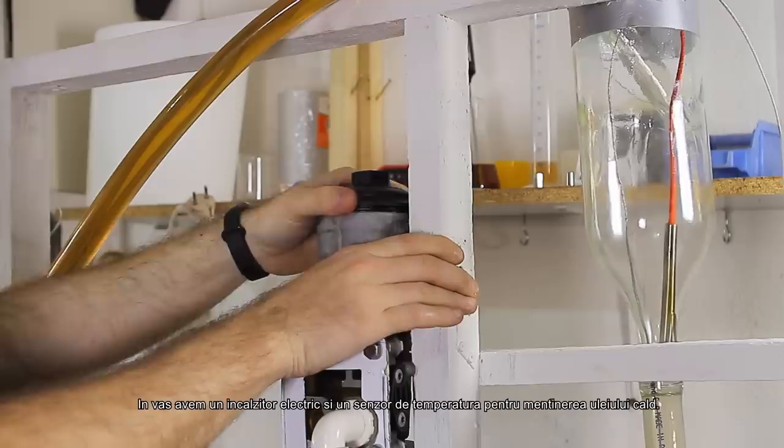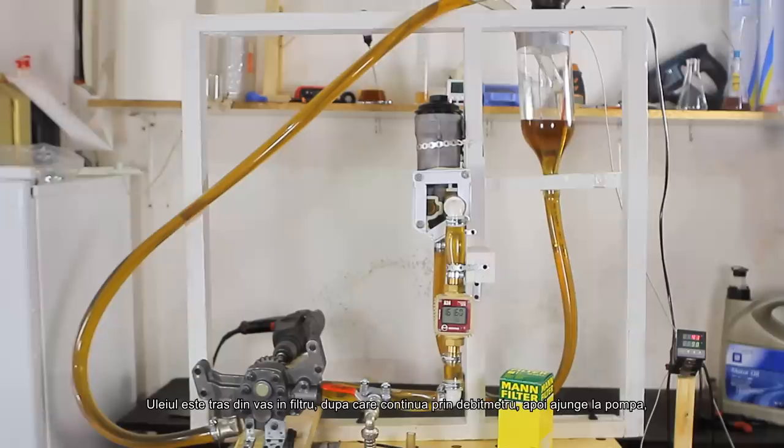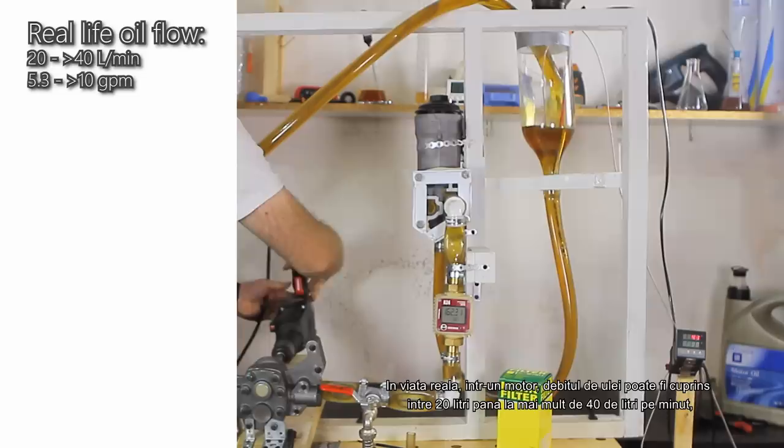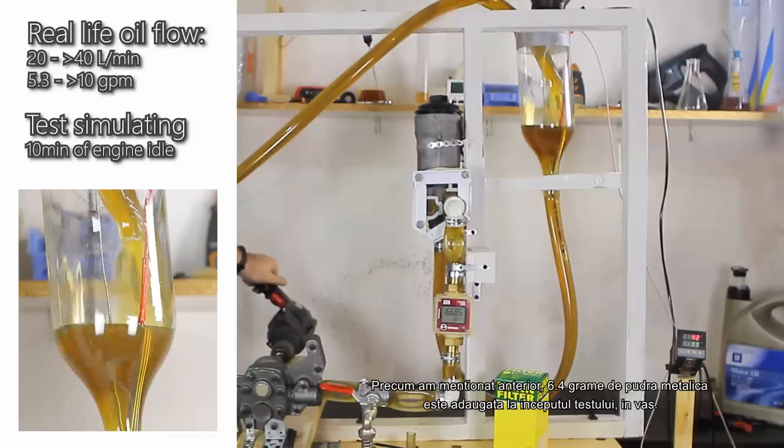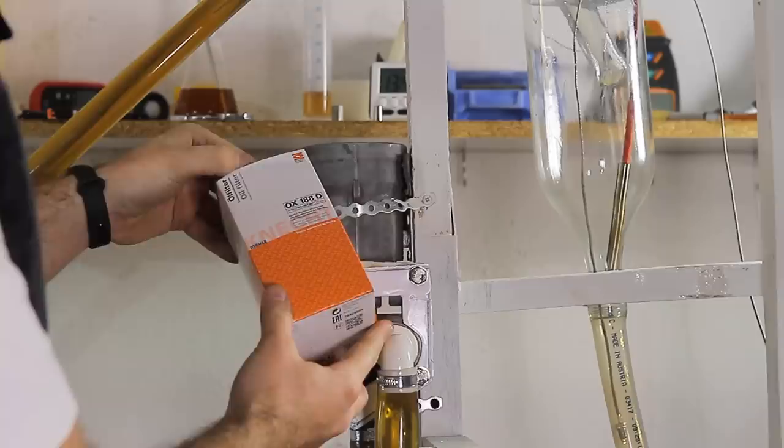The filter is placed inside the housing and the oil is poured in the tank which is just a glass bottle. Inside the tank we have an electric heater and a temperature sensor that keeps the oil warm. The oil is pulled into the filter after which it continues down through the flow meter and then it reaches the pump where it's pushed back into the tank and the cycle continues. In real life, the oil flow to an engine ranges from approximately 20 liters a minute to over 40 liters a minute. So our test would simulate 10 minutes of engine idle. In order to analyze the retention capacity of the filters, 6.4 grams of metal powder are placed in the oil at the start of each test. Now it's time for Kinect to go through the same treatment after which we'll cut open the filters and see how they performed.